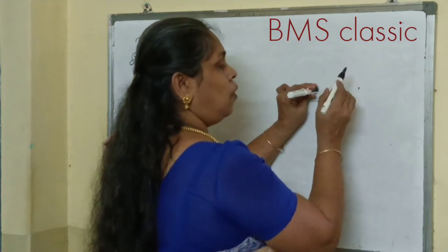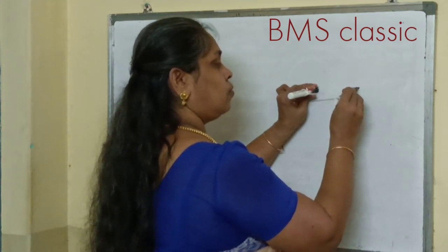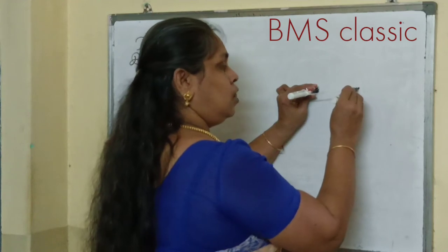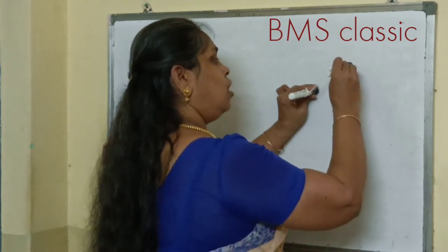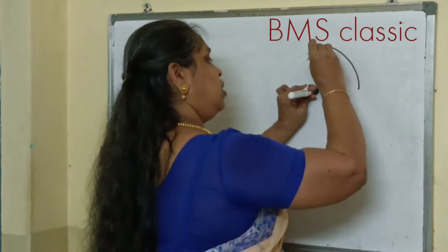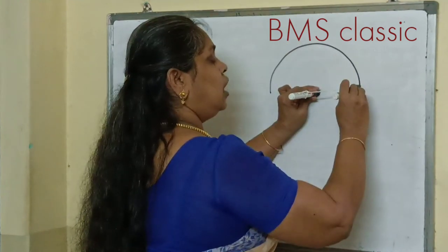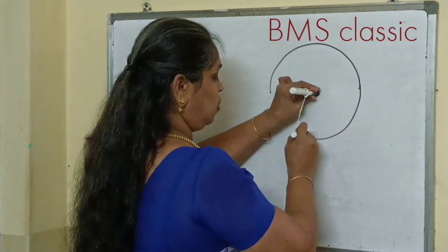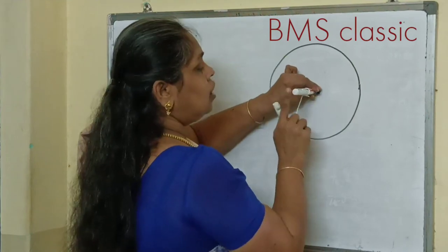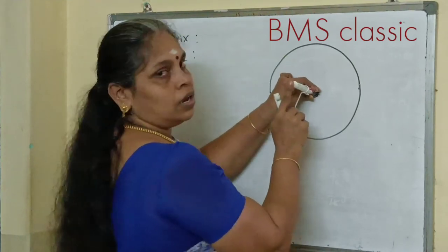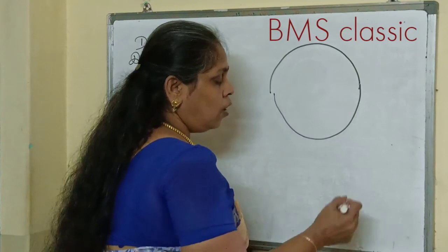This is a fixed distance. Now, we move on this point. This line is going to be a vertical line. This is a directrix. This is a directrix.